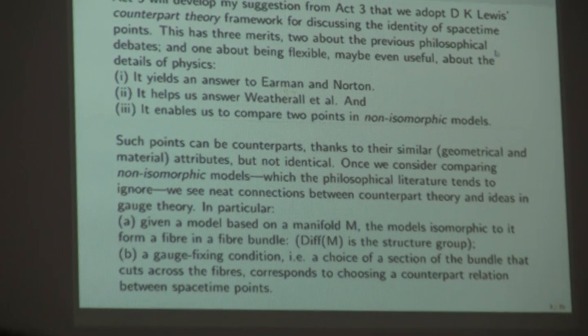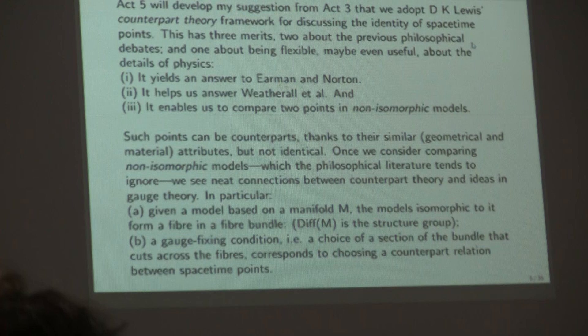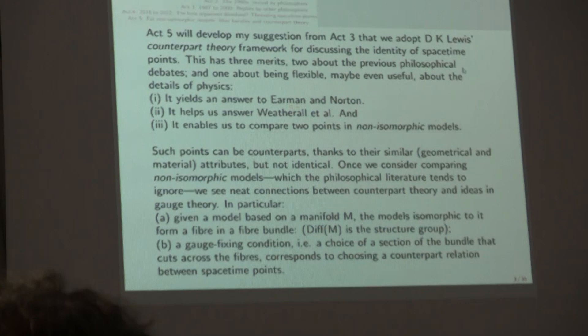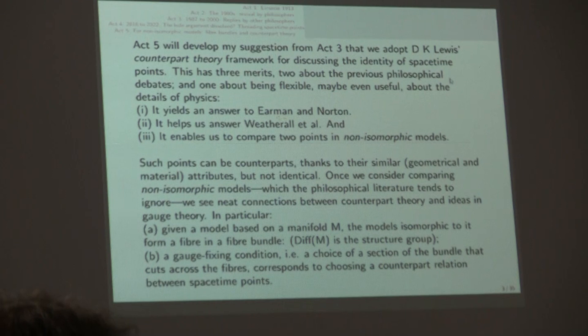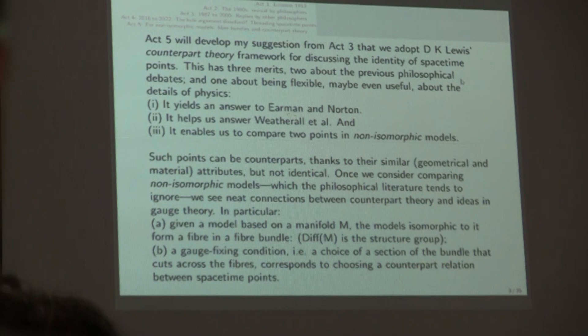I should stress that in these Acts 3 and 4, there's going to be a widespread view amongst philosophers, which is nowadays called sophistication, which is, for general relativity in particular, any two isomorphic models or solutions of the theory, they are the same physical possibility, or they represent the same physical possibility.